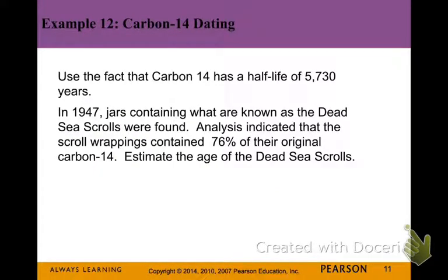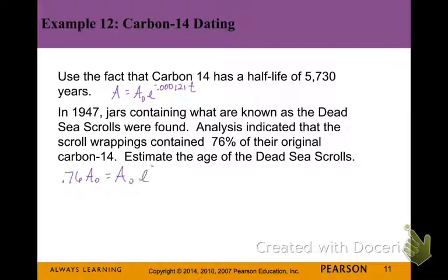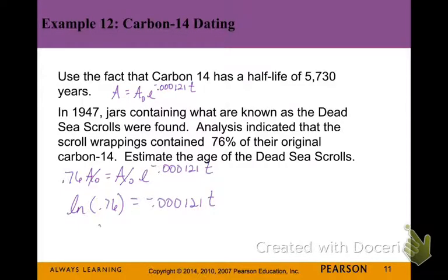Returning to the carbon-14 situation using k = −0.000121: In 1947, jars containing the Dead Sea Scrolls were found. Analysis indicated the scroll wrappings contained 76% of their original carbon-14. So our ending amount is 0.76 times the original. Dividing out the A₀ values and switching to log form: the natural log of 0.76 equals −0.000121 × T. Dividing by that decimal gives an estimated age of 2,268 years.